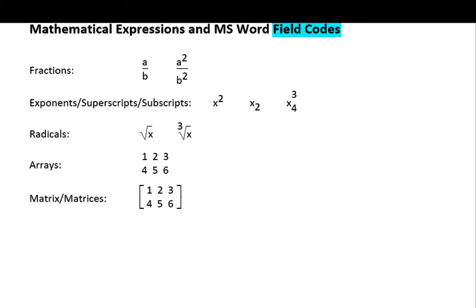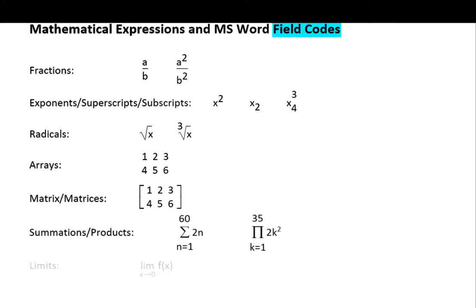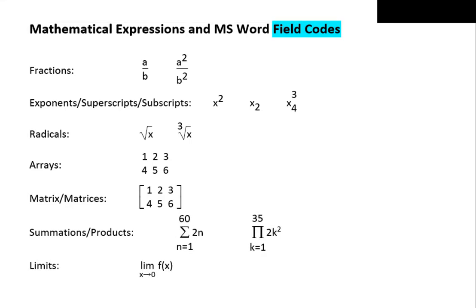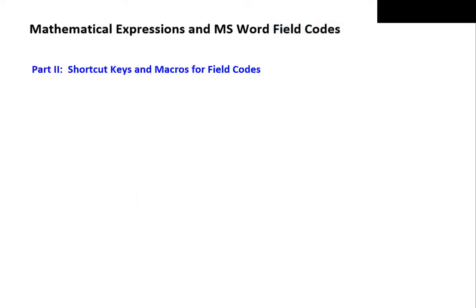Then we cover the field codes for summations and products, and limits. The second part of this series covers creating shortcut keys and templates for these field codes.